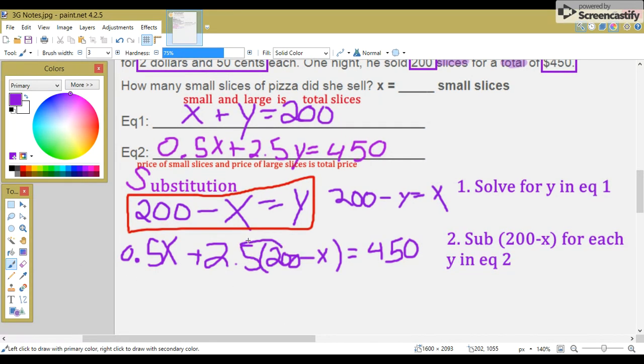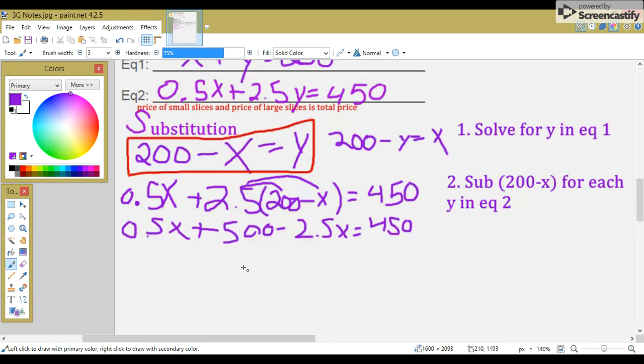From here, we're going to distribute the 2.5. So, 0.5X plus 500 minus 2.5X equals 450. Combine like terms. 0.5X and minus 2.5X is negative 2X. So, negative 2X plus 500 equals 450.